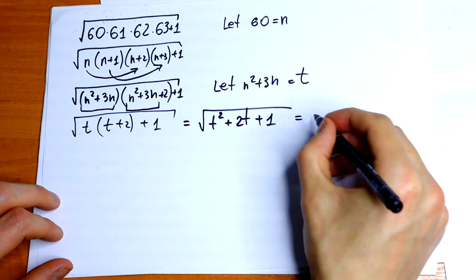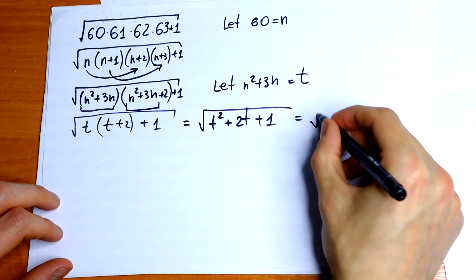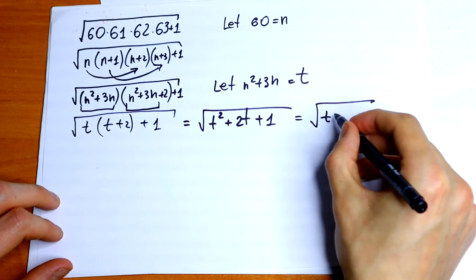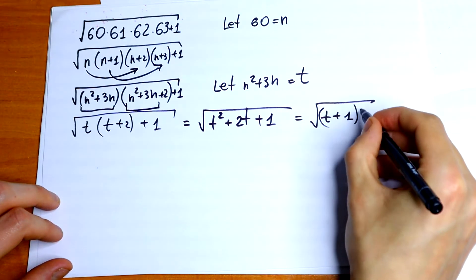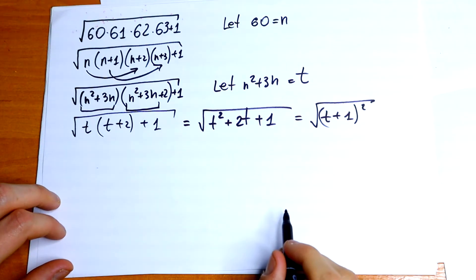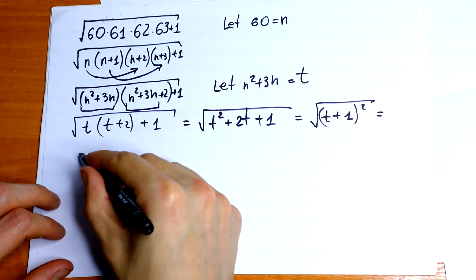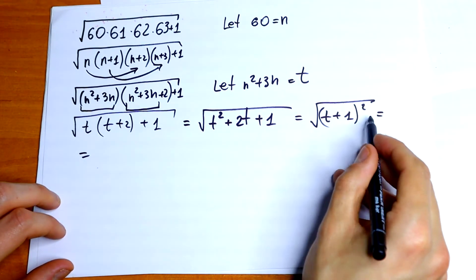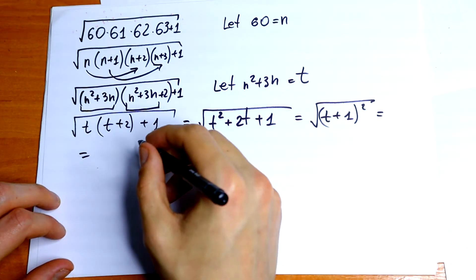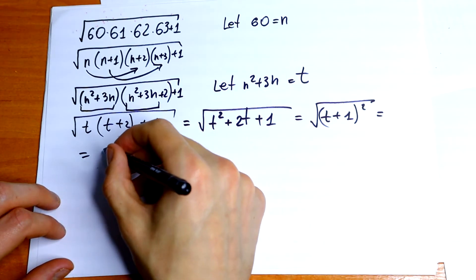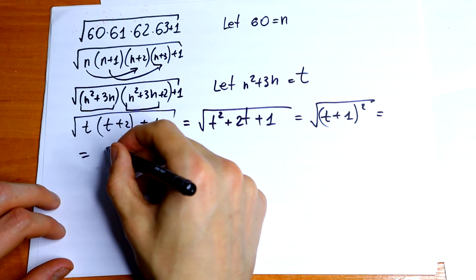This is a formula. We can write it as square root of t plus 1 square. We can simplify this a little bit because we have square root and square sign. So it will be equal to t plus 1.